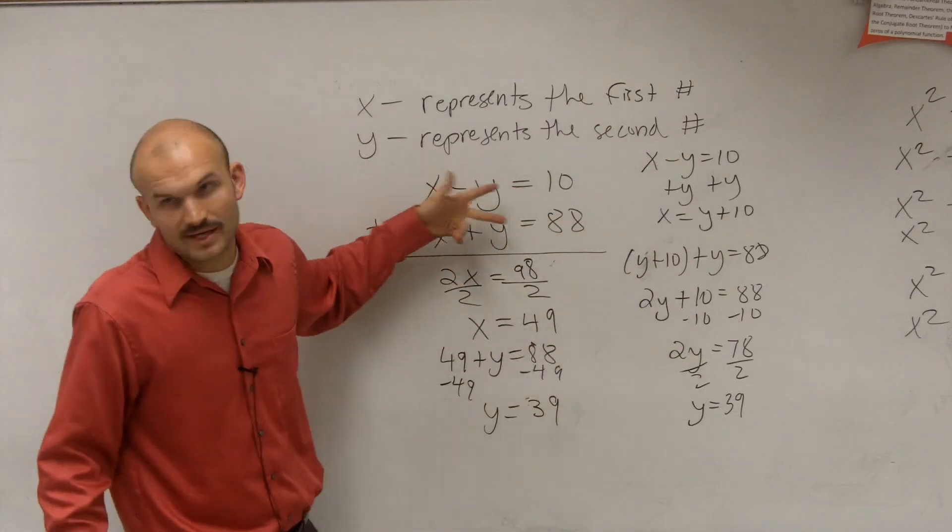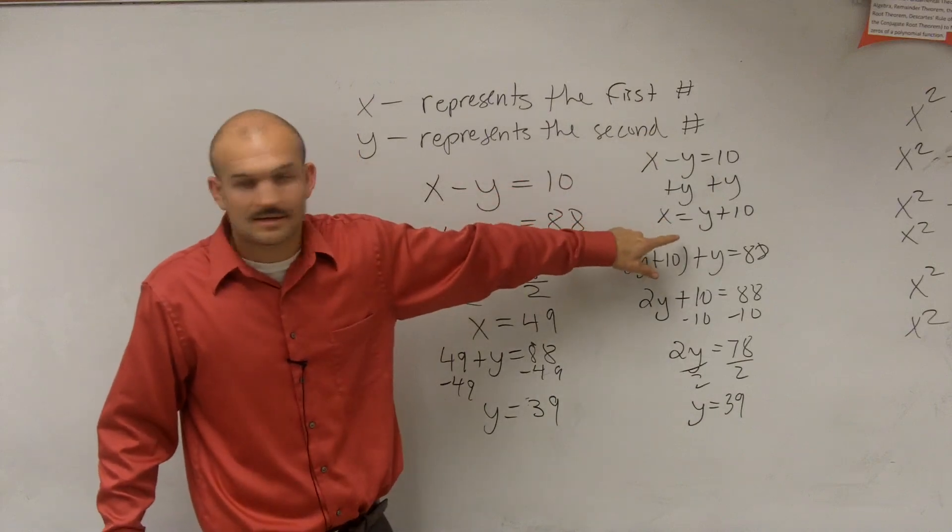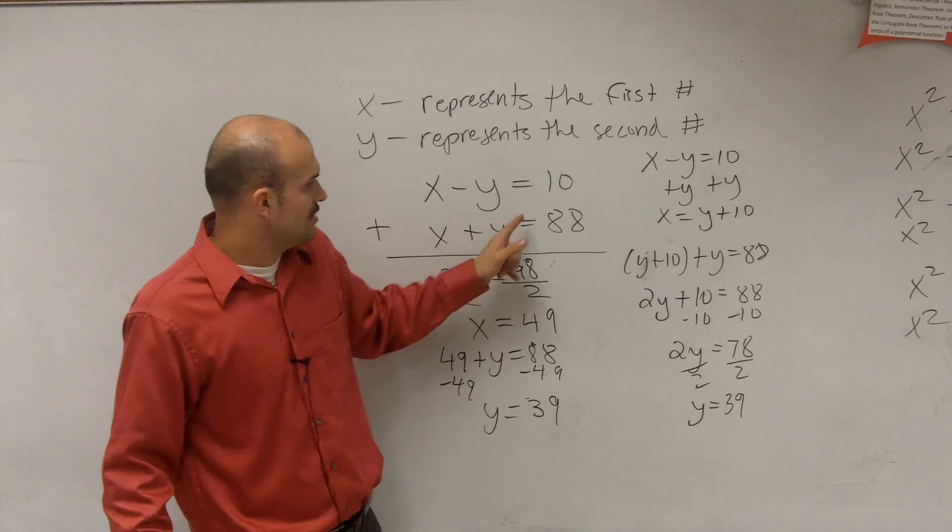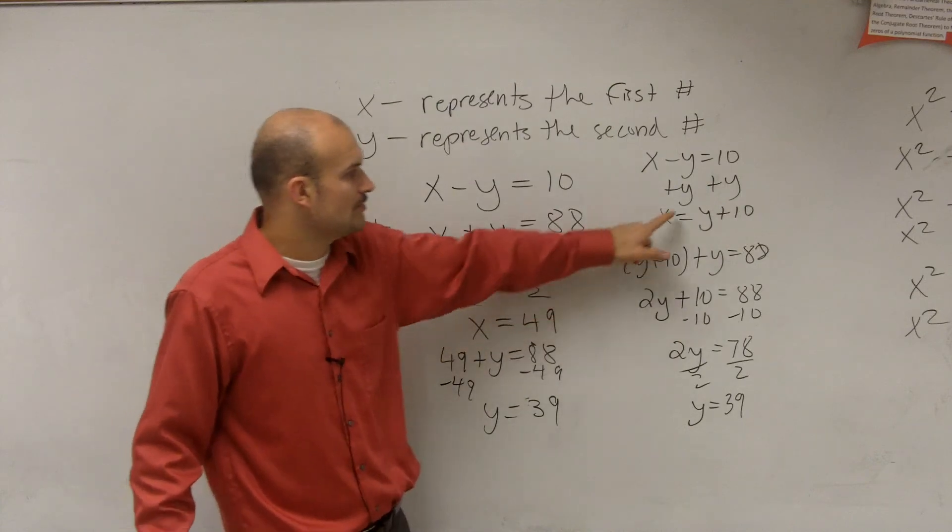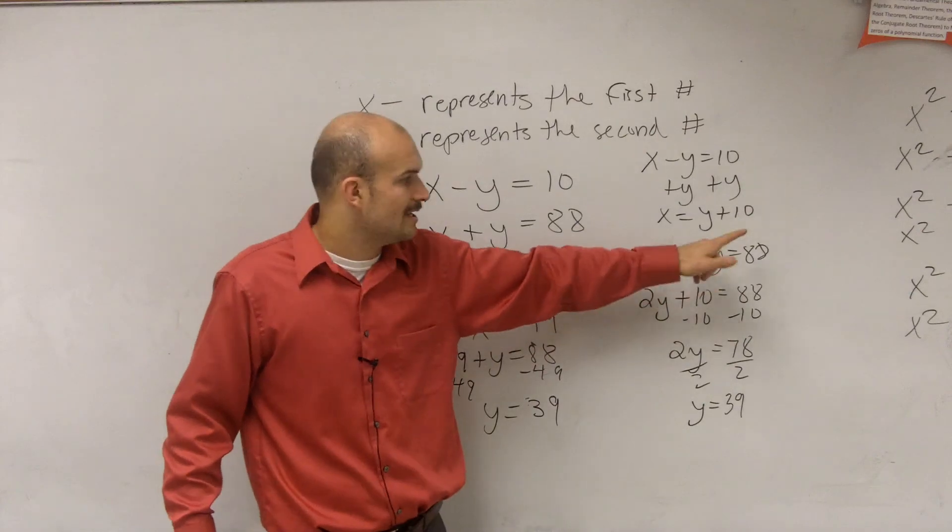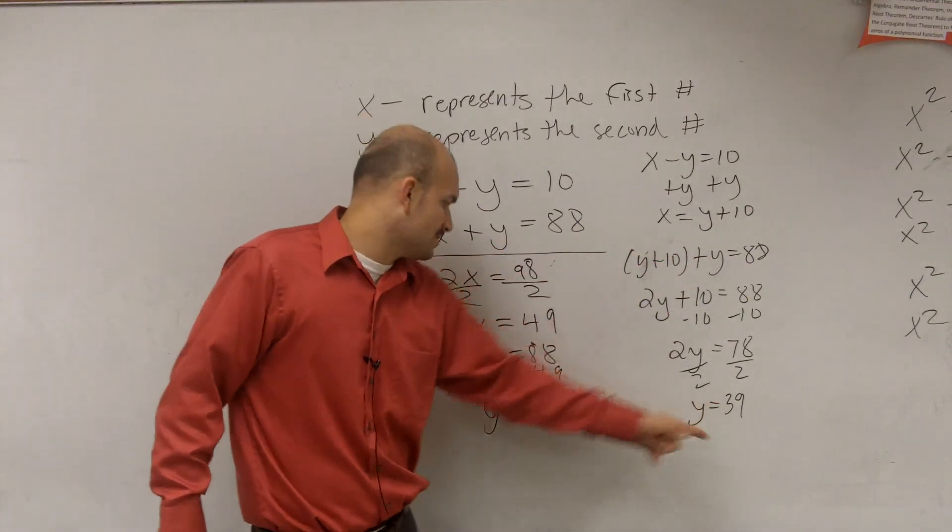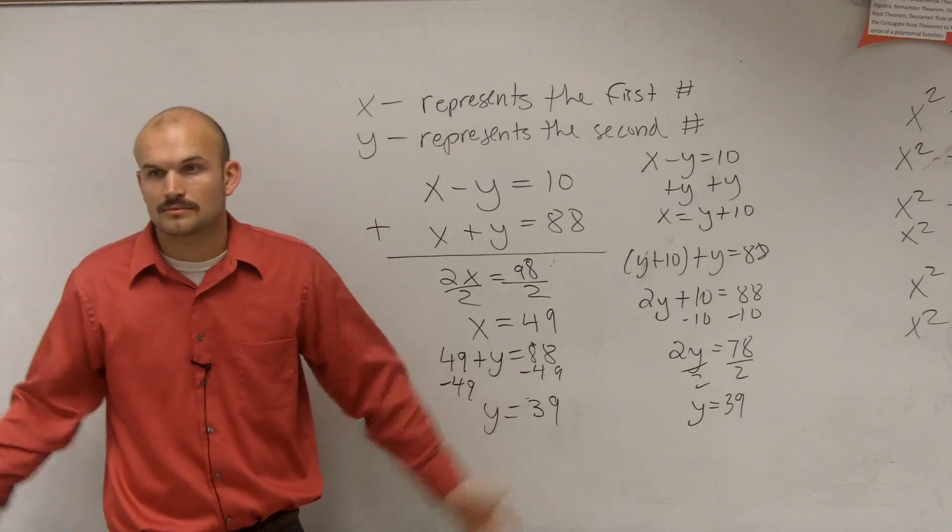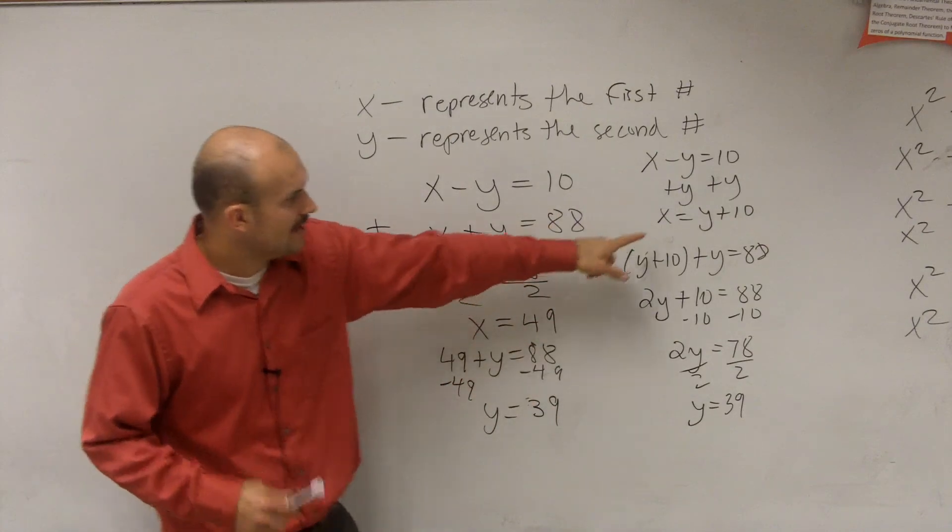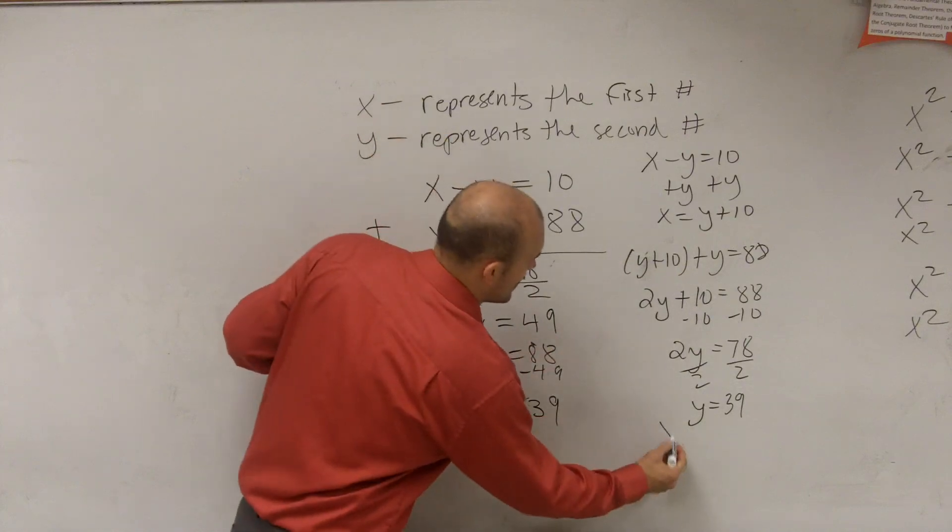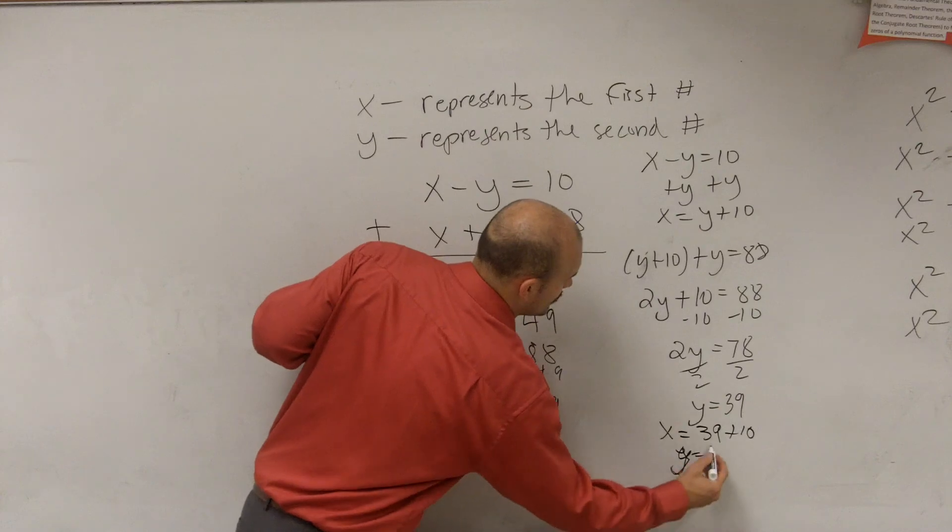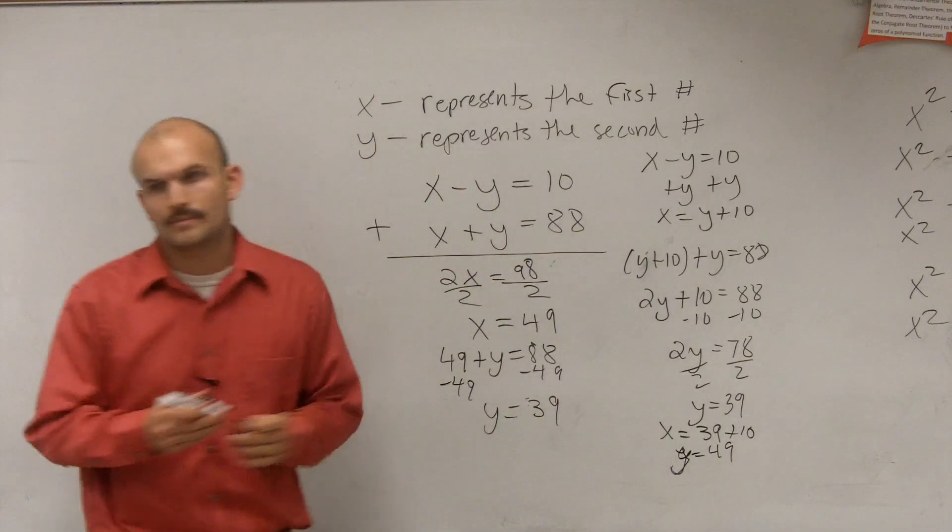All substitution is you pick a variable to solve for, which I did. I picked x. Then you plug the value of x into the other equation. So x plus y equals 88. Well, now x equals y plus 10. So now it's y plus 10 plus y equals 88. Solve, and you get y equals 39, which we already knew. And then you'd plug that back in, and you'd say x equals 39 plus 10, which we already know is x equals 49.